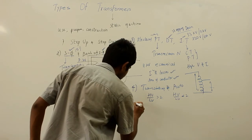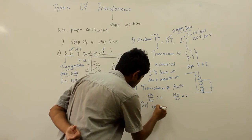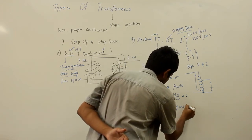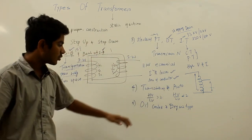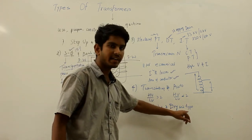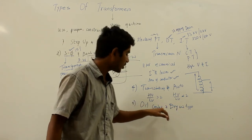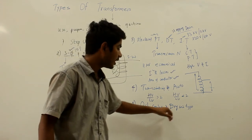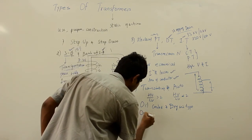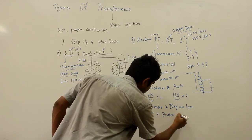The fifth type is oil-cooled and dry air type transformers. In oil-cooled transformers, transformer oil acts as the cooling medium. In dry air type transformers, air acts as the cooling medium. So based on the cooling media, transformers are classified into these two types.